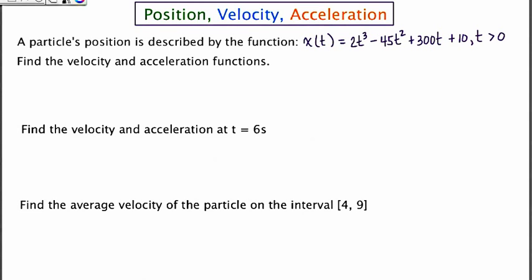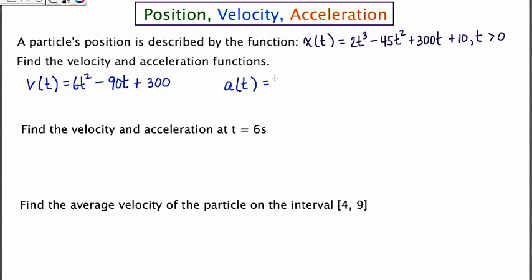The velocity function is related to the position function in that it's the derivative, so this is going to be pretty easy to find. We're just going to take the derivative of the position function. So v of t is going to equal 6t squared minus 90t plus 300. The acceleration function is just the derivative of the velocity function, so a of t is going to equal 12t minus 90.